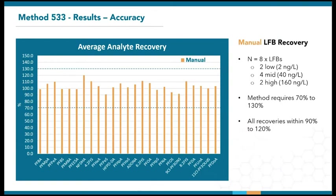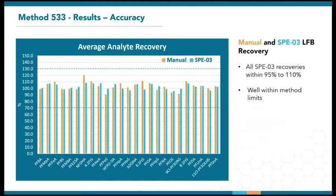Moving on to recoveries and accuracy, these are the manual extraction results across LFBs taken from eight extraction batches. They include two low spikes at 2 nanograms per liter, four mid spikes at 40 nanograms per liter, and two high spikes at 160 nanograms per liter. Method limits are between 70% to 130%, and even with manual extraction, the numbers fell pretty well within that range, between 90% to 120%. Comparing that with the SPE03, the recoveries are even tighter across the board, between 95% to 110%. These are well within the method limits. With the controlled flow rate and thorough bottle rinsing, we do expect optimal recoveries using the SPE03.